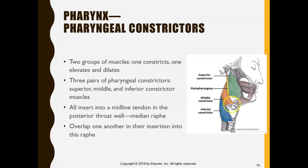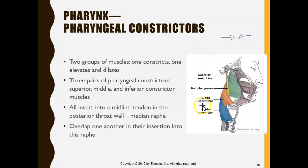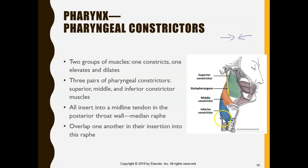When looking at the muscles in the pharynx, it's actually pretty simple and easy to remember. There are three constrictors — muscles that squeeze. We have a superior constrictor muscle, which means above; a middle constrictor muscle in the middle; and then the inferior constrictor muscle, which means below. So we have one on top, one in the middle, and one at the bottom — the superior, middle, and inferior constrictor pharyngeal muscles.